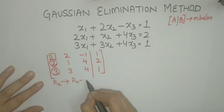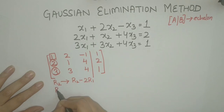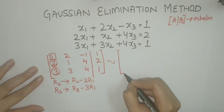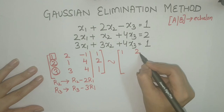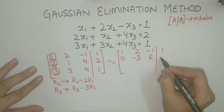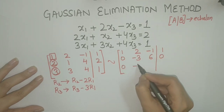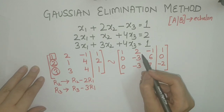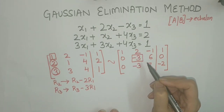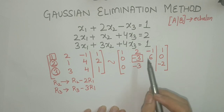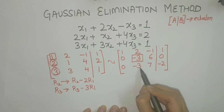This can be done by applying the row operations R2 → R2 − 2R1 and R3 → R3 − 3R1. Then the augmented matrix becomes equivalent to [1, 2, −1 | 1; 0, −3, 6 | 0; 0, −3, 7 | −2]. The next leading entry is −3. We can make it 1 or keep it as is. Let us keep −3 as it is and try to make the entry below it zero.